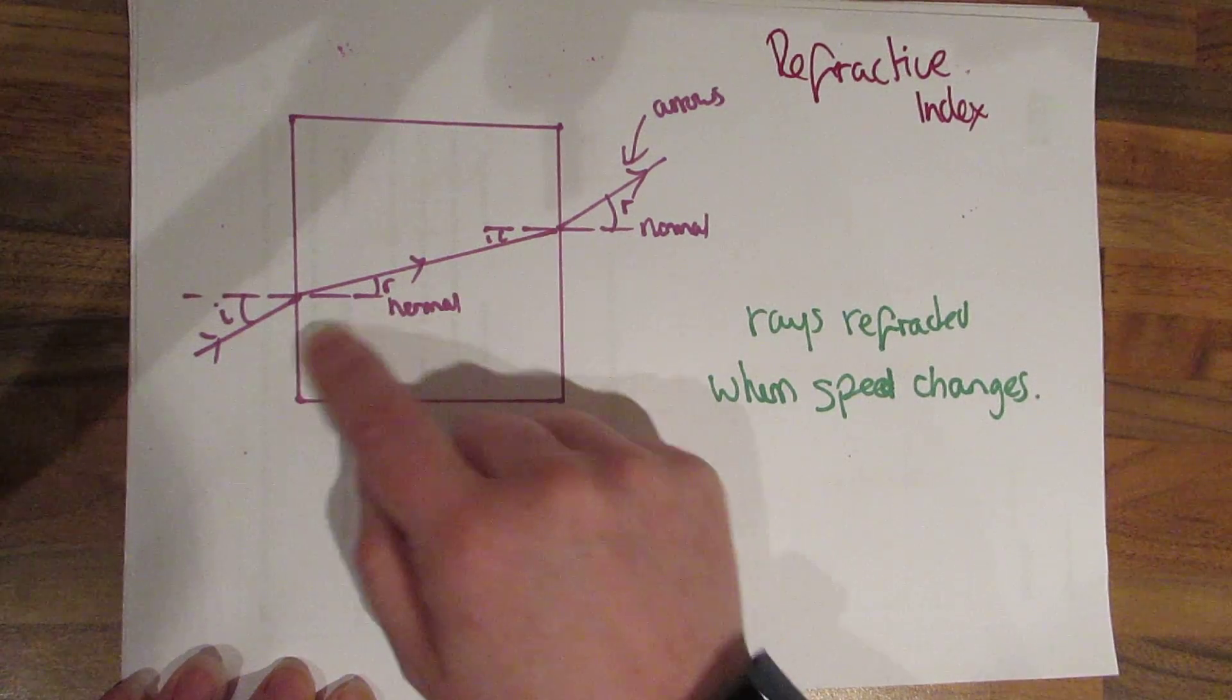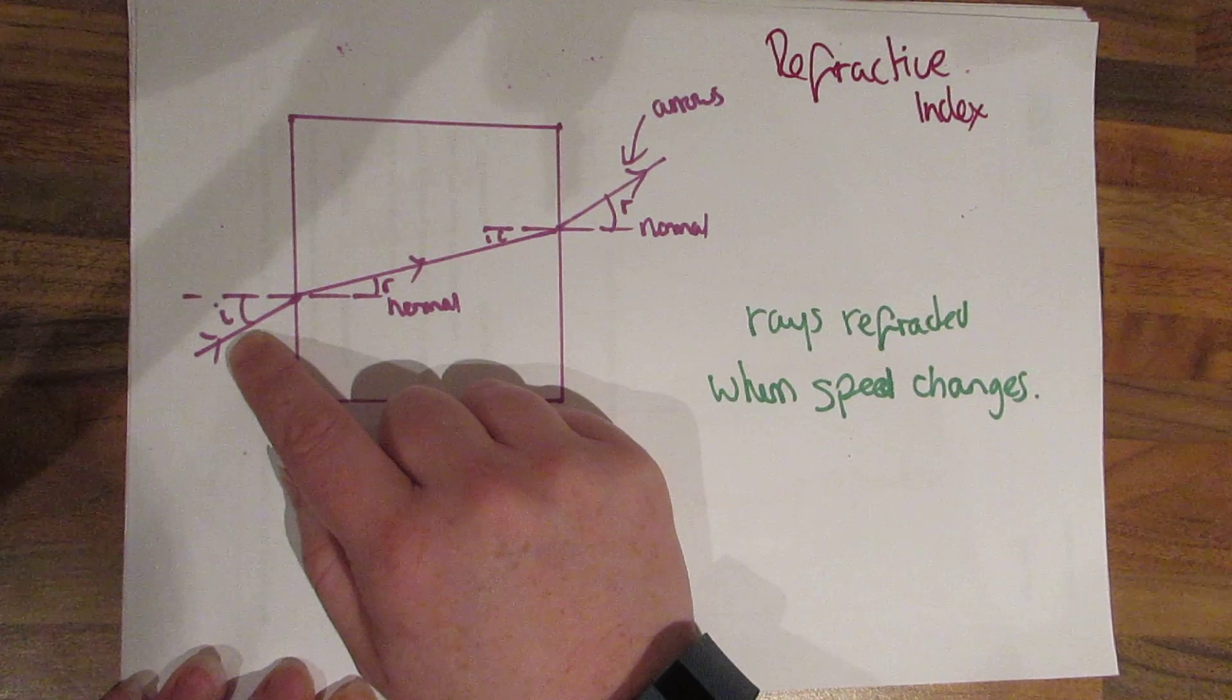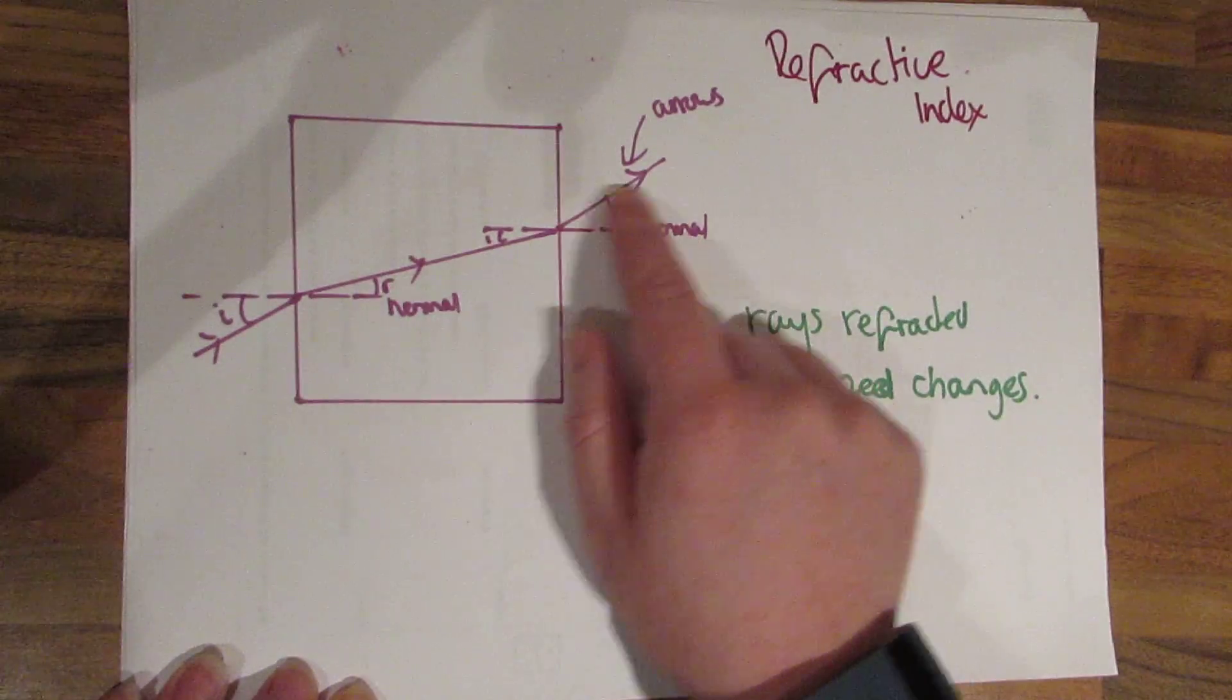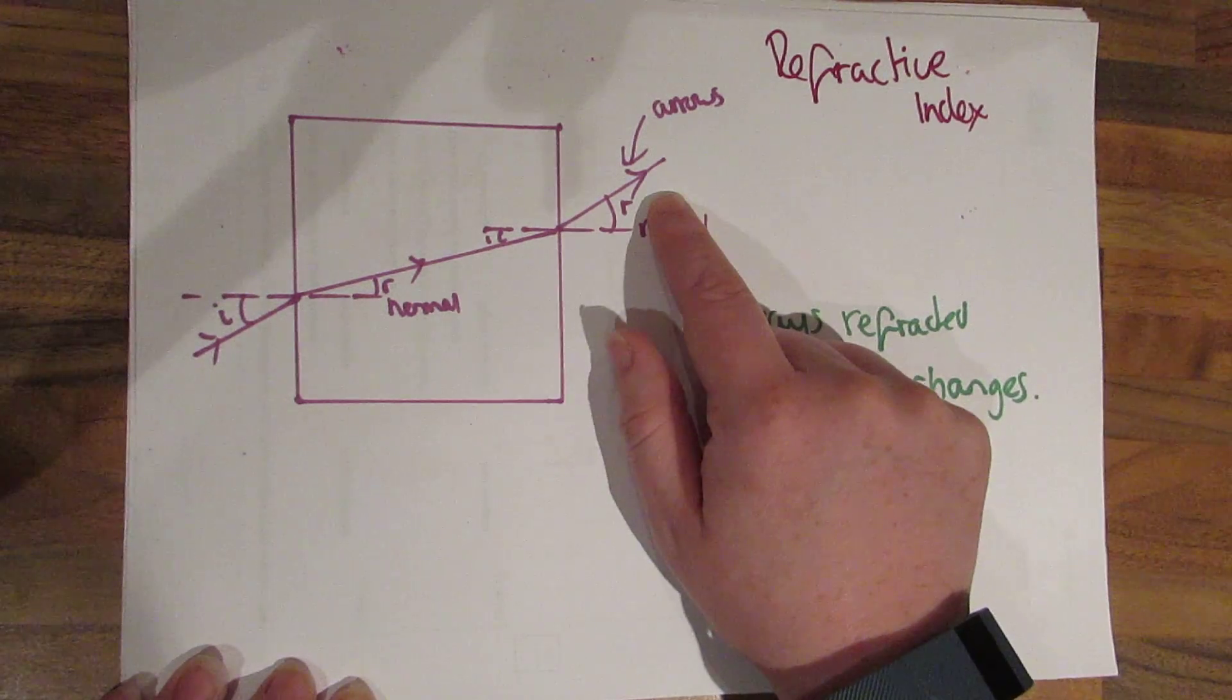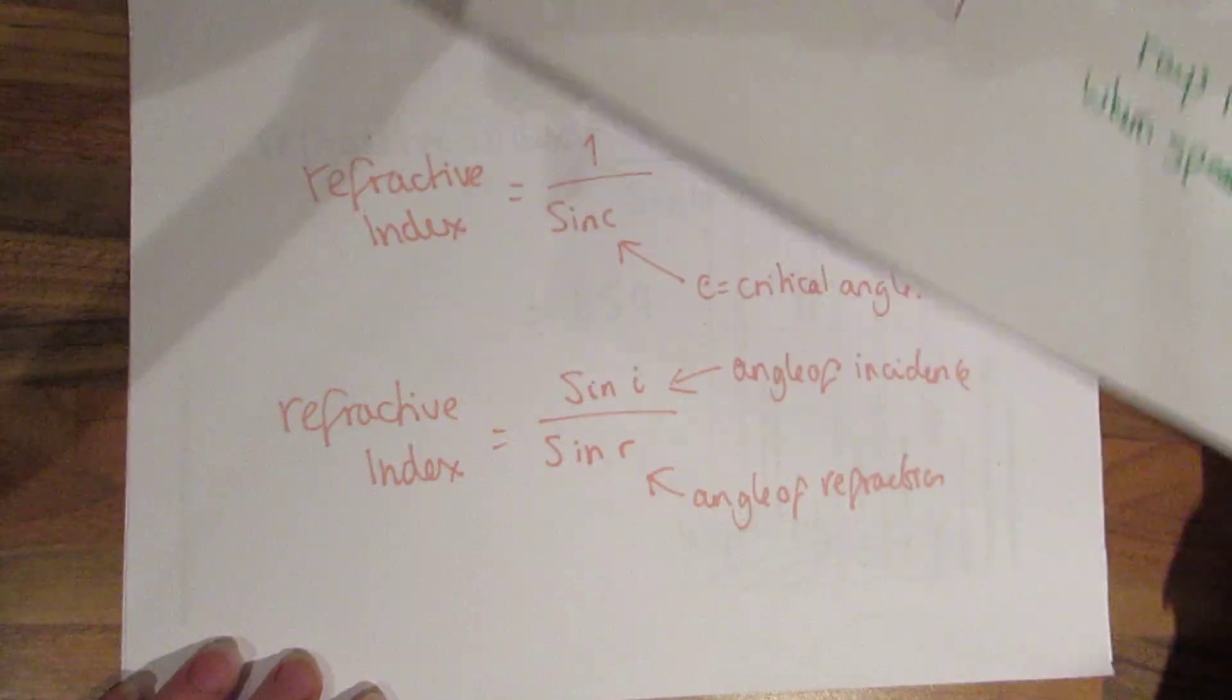This is our normal here, our angle of incidence and our angle of reflection. You need to know that these are measured against the normal and whenever you're drawing rays put the directional light on with arrows so the examiner can see where the ray is coming from.